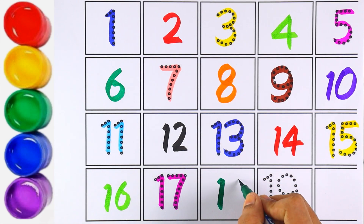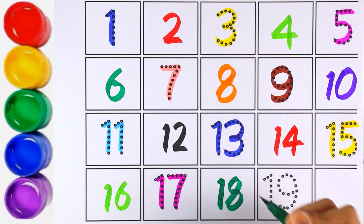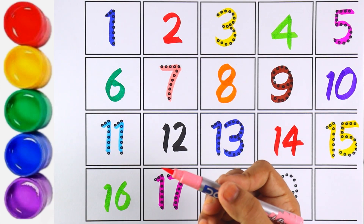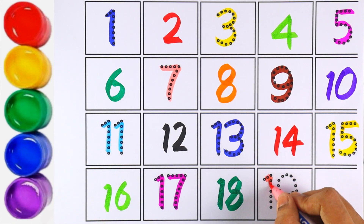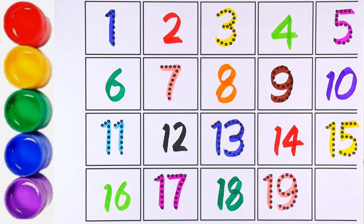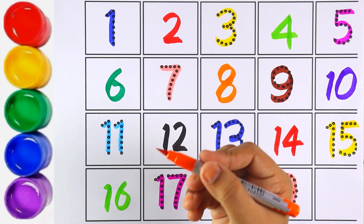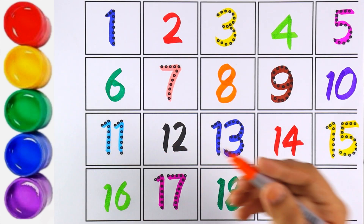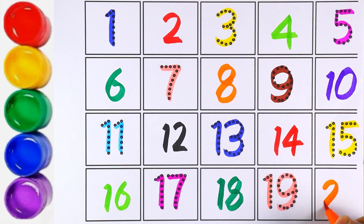Number eighteen — one and eight makes the number eighteen. Light pink color. One and nine makes the number nineteen. Orange color: twenty. Two and zero makes the number twenty.